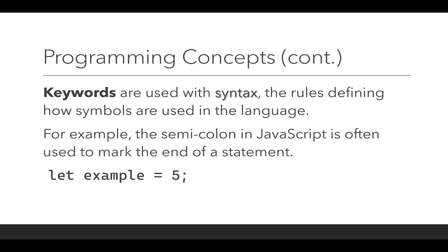Keywords are also used with syntax — the rules defining how symbols are used in a programming language. For example, the semicolon in JavaScript is often used to mark the end of a statement. This example uses the keyword `let`, the variable `example`, then the equal sign as syntax, then the number 5 as the value of the variable, and a semicolon at the end. This shows keywords, variables, and the syntax rules — defining how symbols are used, with the equal sign before the value and the semicolon to mark the end of the statement.